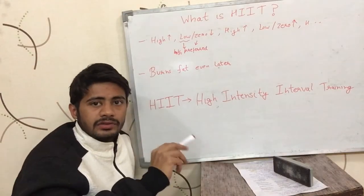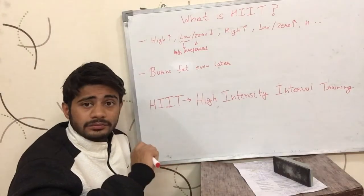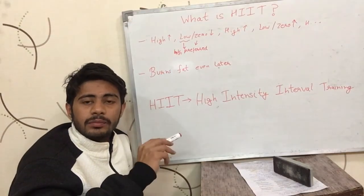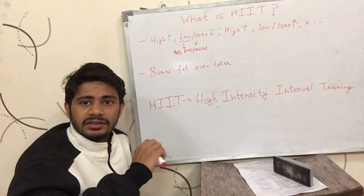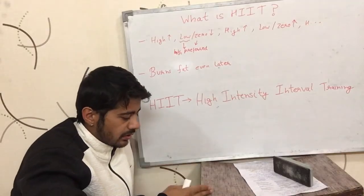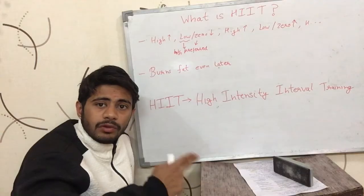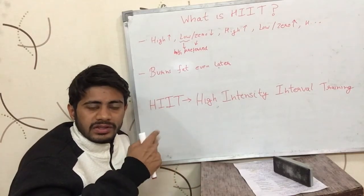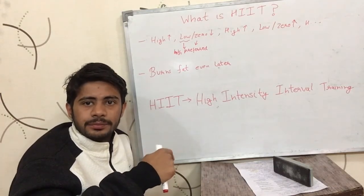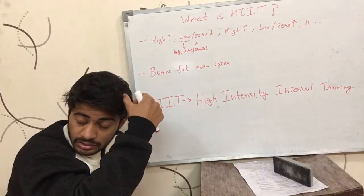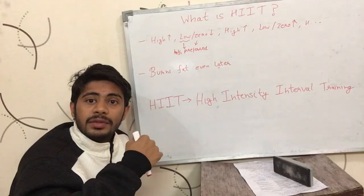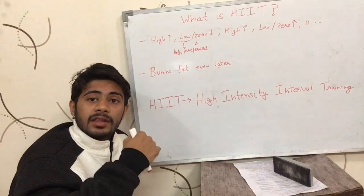For example, let's say you are running at your maximum speed for about 30 seconds, 45 seconds, or a minute. Then you started walking for another one minute or one and a half minutes. The first one minute was high intensity and the second one or one and a half minutes was low intensity.